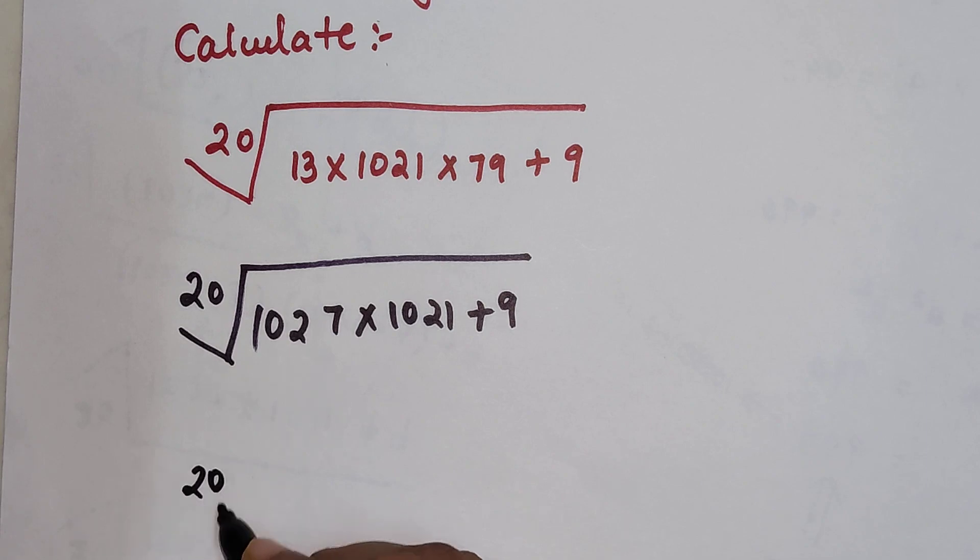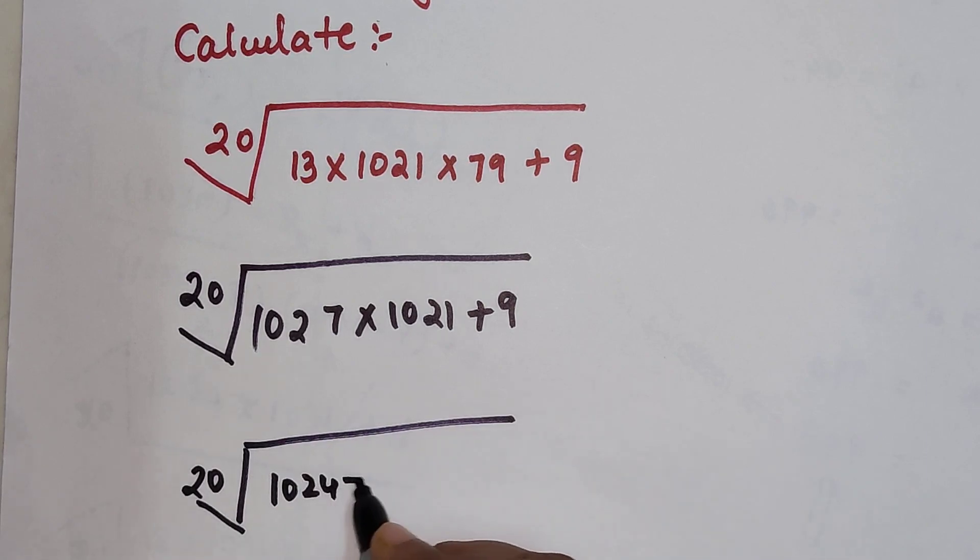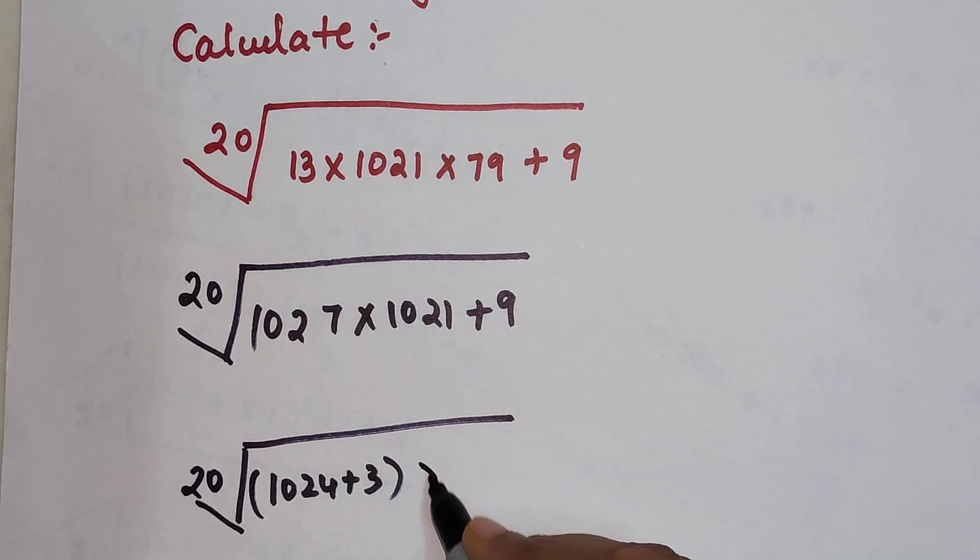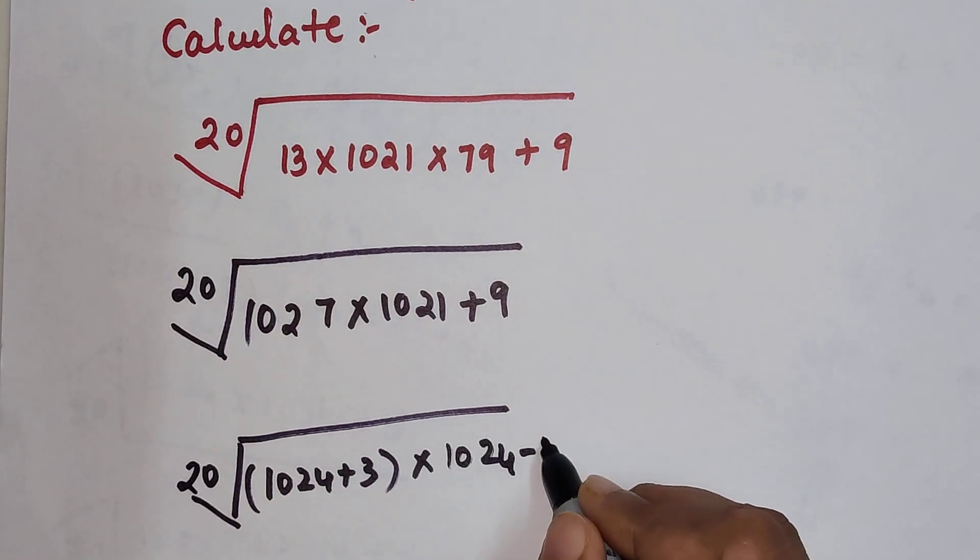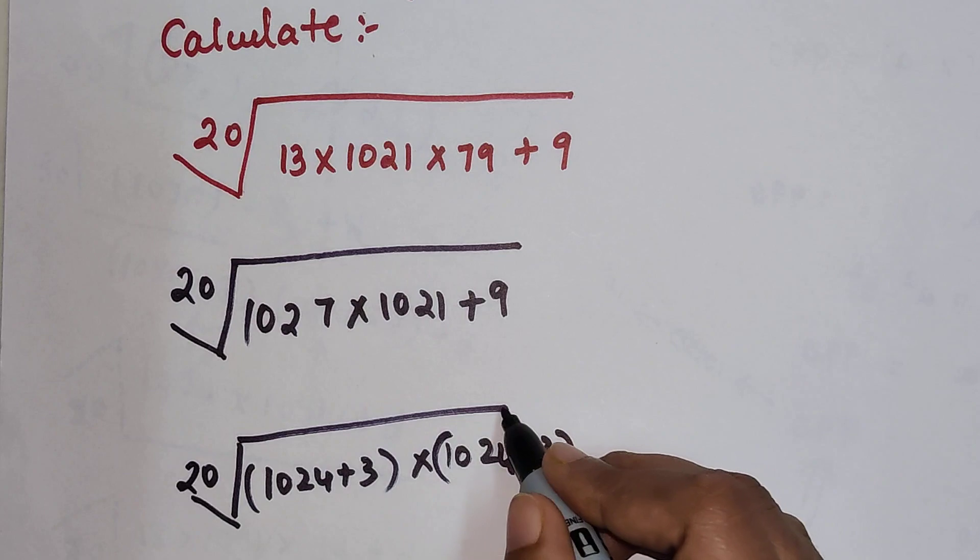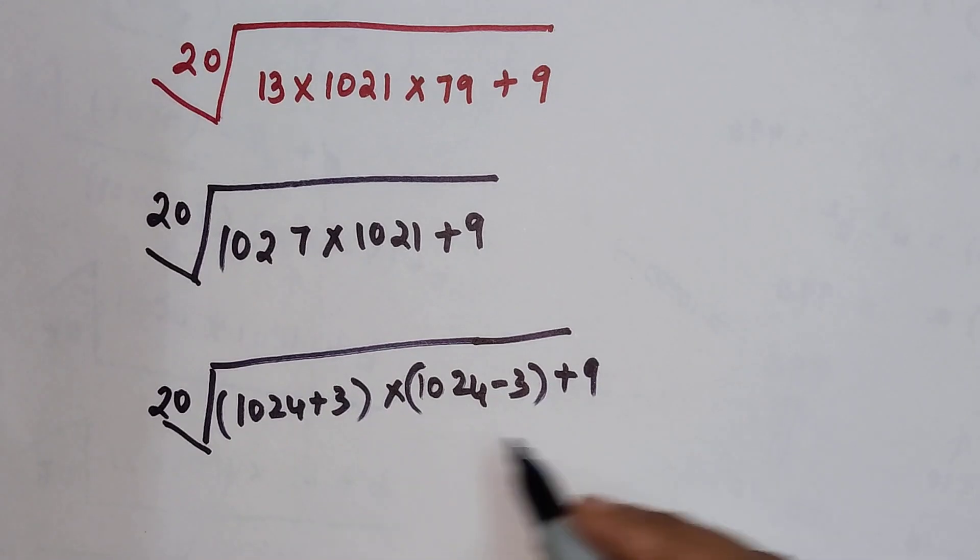I will realize that I can write 1024 + 3 as 1027 and 1024 - 3 as 1021, plus 9.